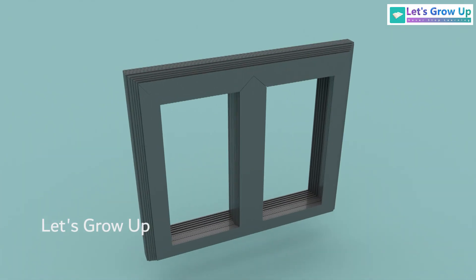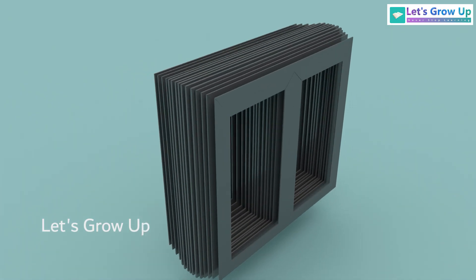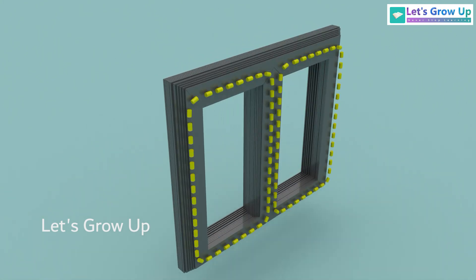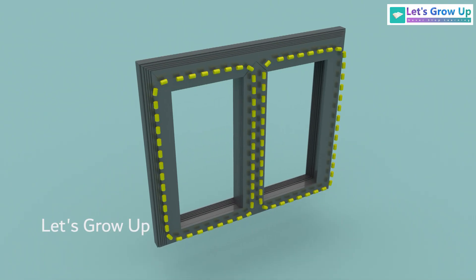The core, typically made of laminated iron or other magnetic materials, provides a path for the magnetic flux generated by the transformer's windings.